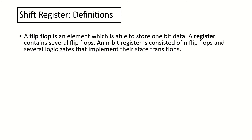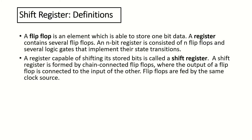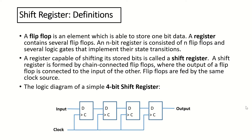A flip-flop is an element which can store one bit of data, and registers are formed by connecting several flip-flops. A register which is capable of shifting its stored bits is called a shift register. A shift register is formed by chain-connected flip-flops, where the output of a flip-flop is connected to the input of the other. Flip-flops are fed by the same clock source. Here you can see that the output of the flip-flops are connected as inputs of the next flip-flop, and they are all using the same clock source.